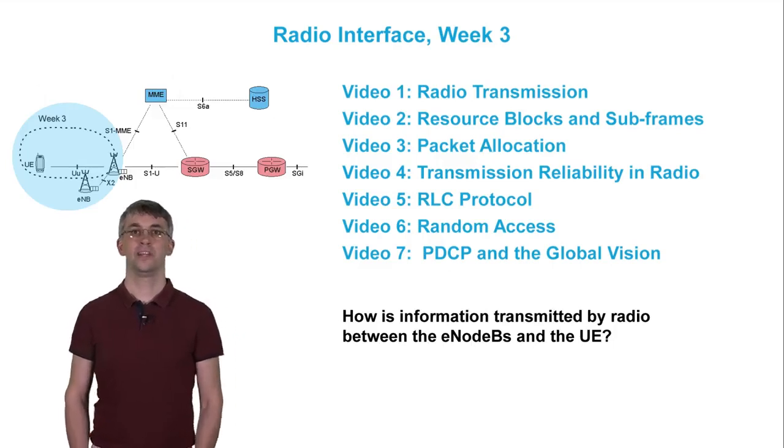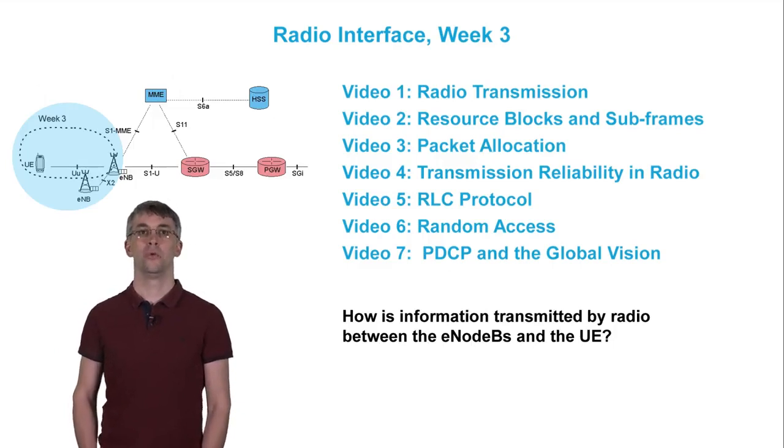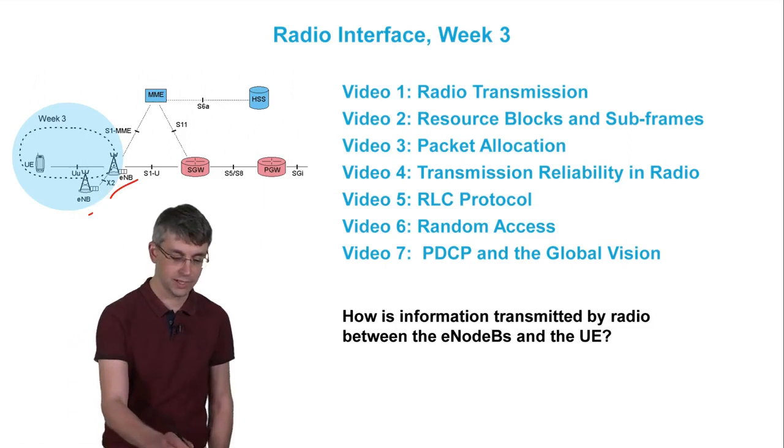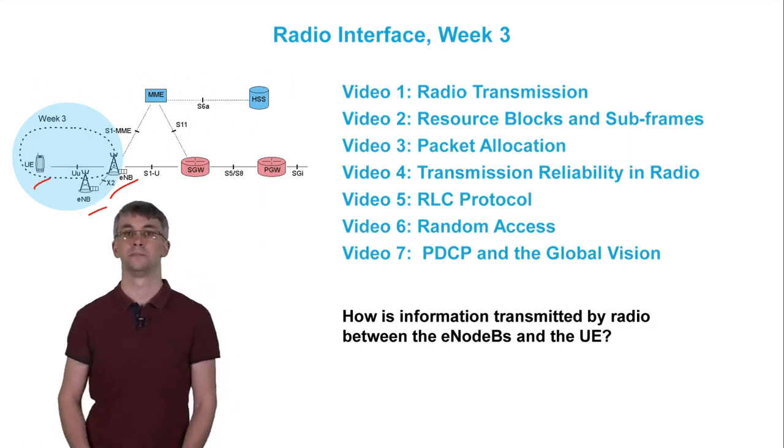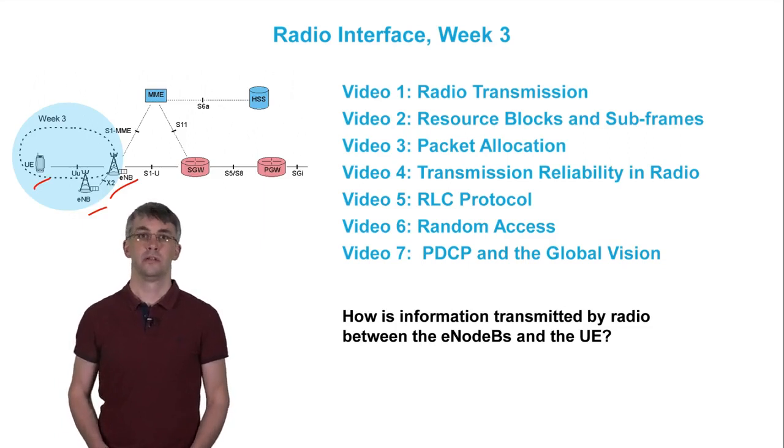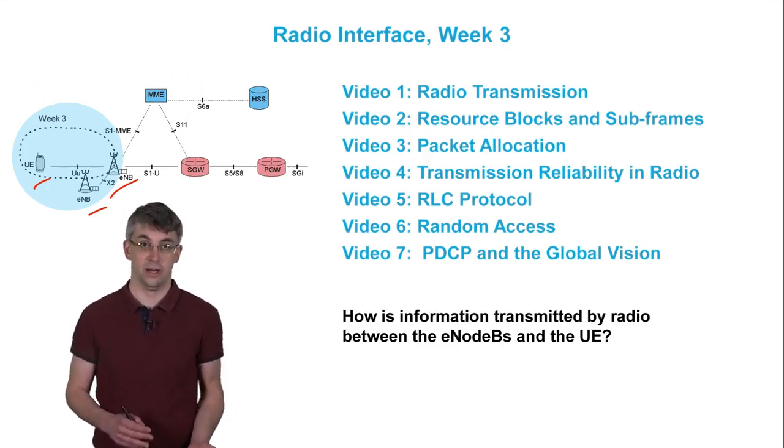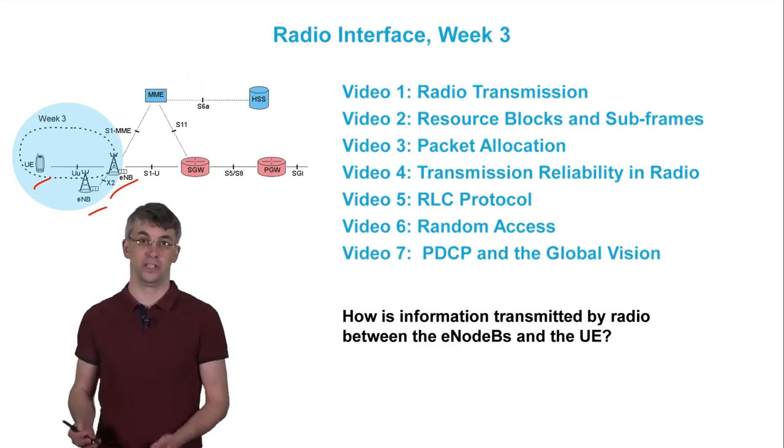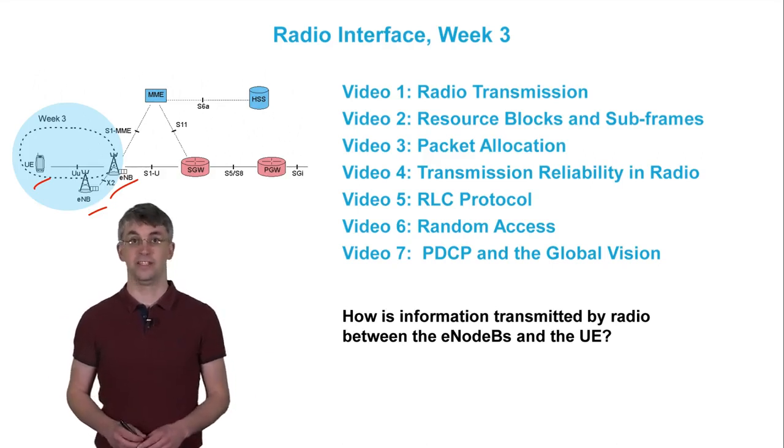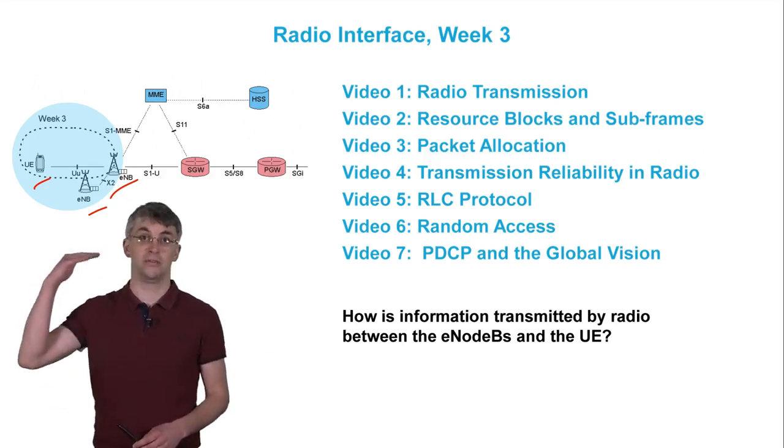Hi! This week we will focus on the radio interface of LTE. We will see how information is transmitted by radio between the E0Bs and the UEs. The physics of the transmission induces constraints that we have to handle. We also need to share the bandwidth between users of the same cell and to interface with the core network. To manage all that, the radio interface of LTE is structured into several layers.